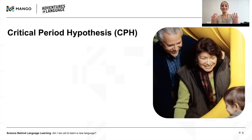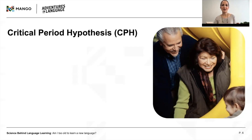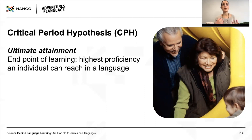Now, are second languages subject to this same critical period? It could be that simply having experience learning a first language tunes your language learning muscles, so to speak, so that they're still usable for language learning later in life. The critical period hypothesis says that age is strictly tied to ultimate attainment, which is the end point of learning — essentially the highest proficiency that an individual can reach in a language. And if you don't start learning a language by a certain age, your ultimate attainment will never match that of a native speaker.